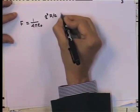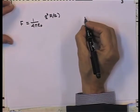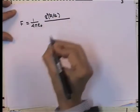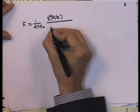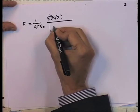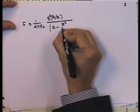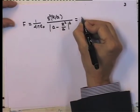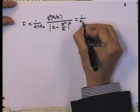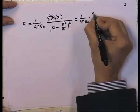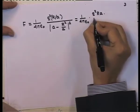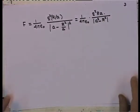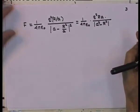q' = −qR/a, so I get q·(qR/a) and the distance is (a − R²/a)². Because q' is negative, this is an attractive force. Simplifying: F = (1/4πε₀) · q²Ra / (a² − R²)². The force is attractive because one charge is positive and the other is negative.